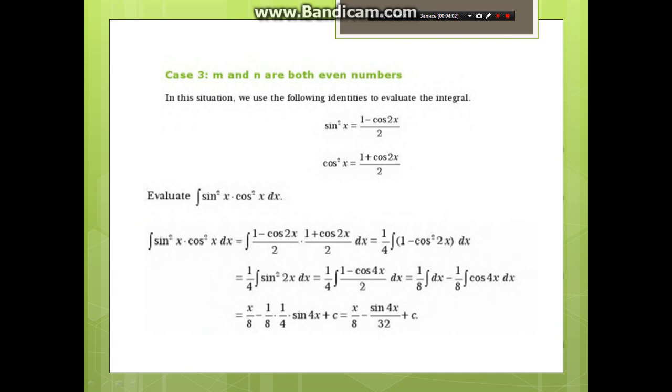Case 3: m and n are both even numbers. In this situation, we use the following identities to evaluate the integral: sin²x = (1 - cos 2x)/2 and cos²x = (1 + cos 2x)/2.